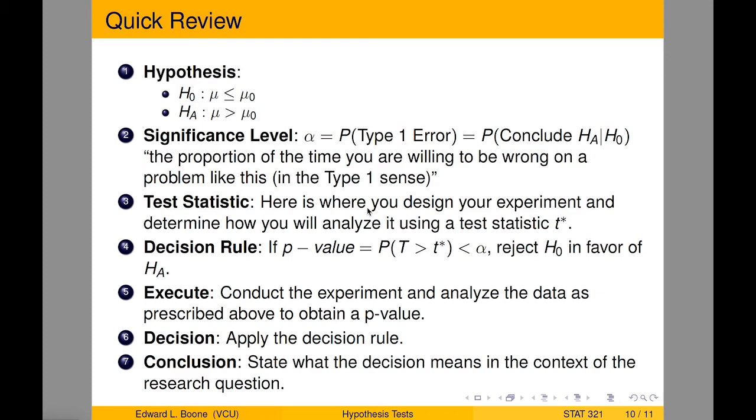And this is the probability of a type one error, which is the probability that you accidentally say that the alternative is true when the null is actually true. So, being a skeptic, you wouldn't want to accidentally say that the alternative is true, because you're trying to get evidence otherwise.